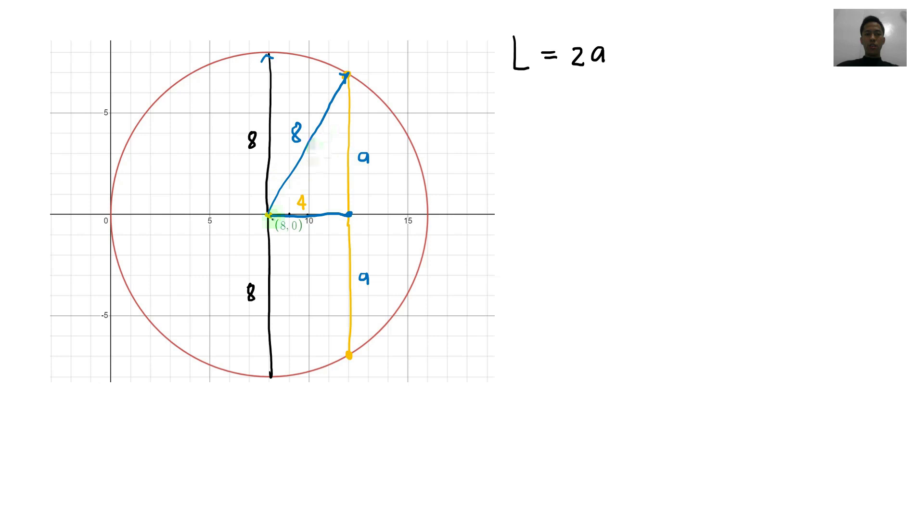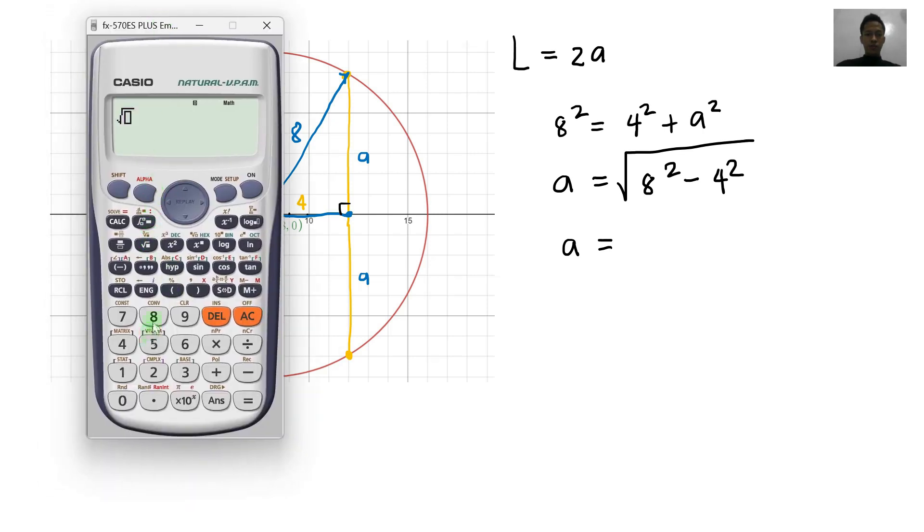So we can compute A here using the Pythagorean theorem because this is a right triangle here. So 8 squared is equal to 4 squared plus A squared. So basically, A is just equal to the square root of 8 squared minus 4 squared. So ikukompute lang natin siya guys using our calculator. Ayan. Kompute lang natin. So square root of 8 squared minus 4 squared. So equals lang natin. So 4 square root of 3. 4 square root of 3 ang A natin.